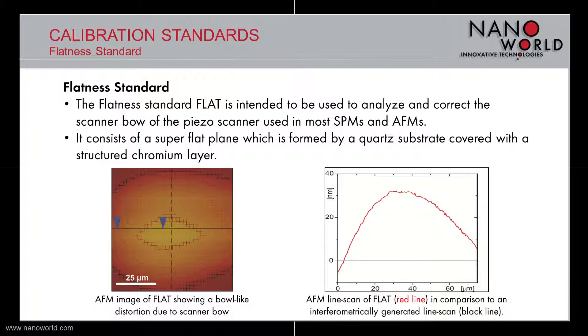On bottom right you can observe the comparison between an AFM line scan of the FLAT calibration standard with its bow-like distortion, which is shown in red, and an interferometrically generated line scan shown in black.